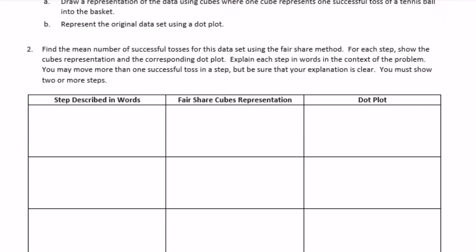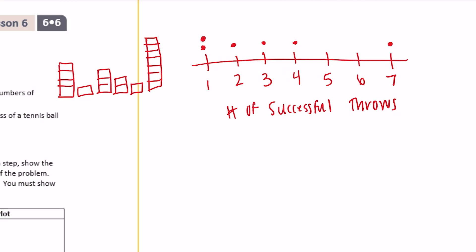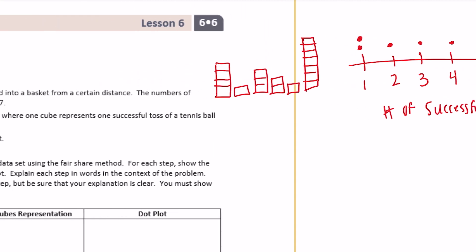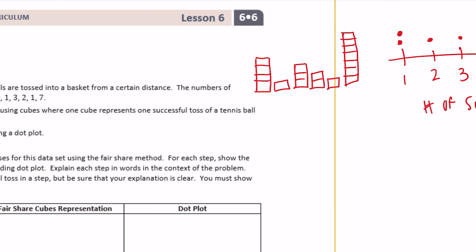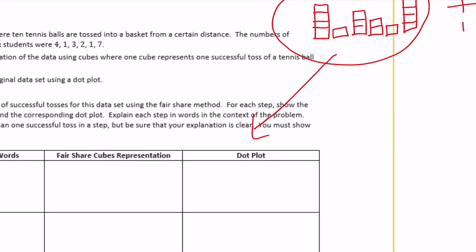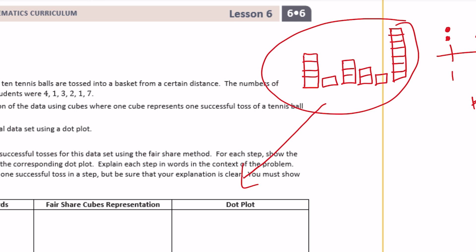To find the mean number of successful tosses using the fair share method: for each step, show the cubes representation and the corresponding dot plot, and explain each step in words in the context of the problem. You may move more than one toss in a step, but your explanation must be clear and you must show two or more steps. Now we're going to rearrange using the fair share method. I'll put them in order: one, one, two, three, four, and seven.